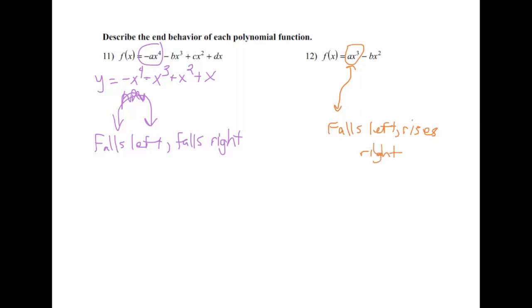The rules to memorize: if it's an even power, they either both go up or both go down — both up if positive, both down if negative. If it's an odd power, they're opposite — rising left falling right if negative, falling left rising right if positive.